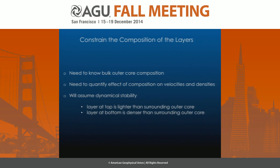So how can we express this in terms of compositions? You can try to express it thermally, or maybe it doesn't even exist — maybe it's what we don't know about the mantle. But if it's there and if it's compositional, then we have to find a way to say what sort of compositions would cause those layers to exist. There are a couple of prerequisites. You need to know what the bulk outer core composition is. You need to quantify the effect of compositions on velocities. And underlying everything is that we will assume dynamical stability: the layer at the top has to be lighter than the surrounding outer core, otherwise it would sink, and the layer at the bottom needs to be denser than the surrounding outer core, otherwise it will float.